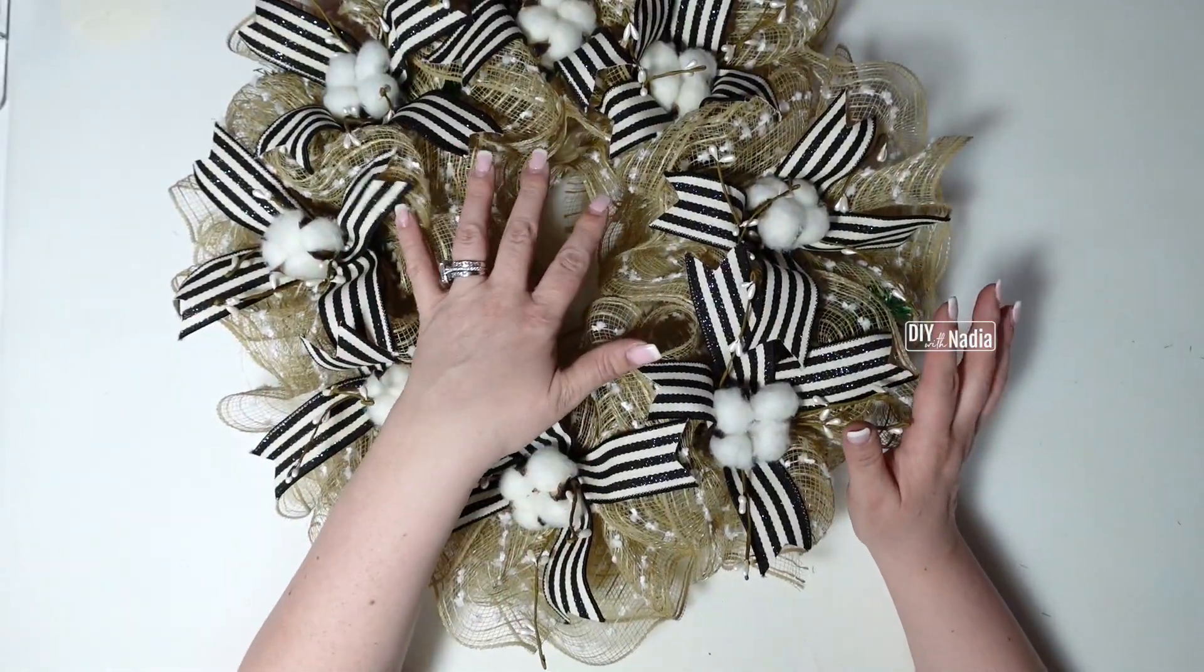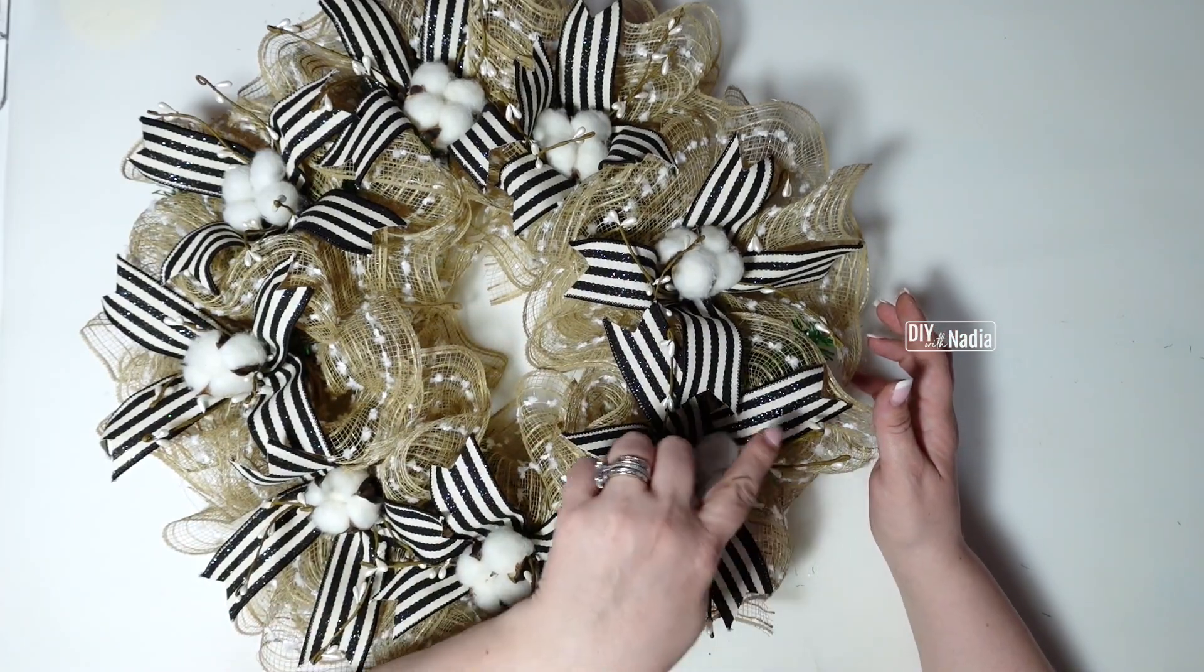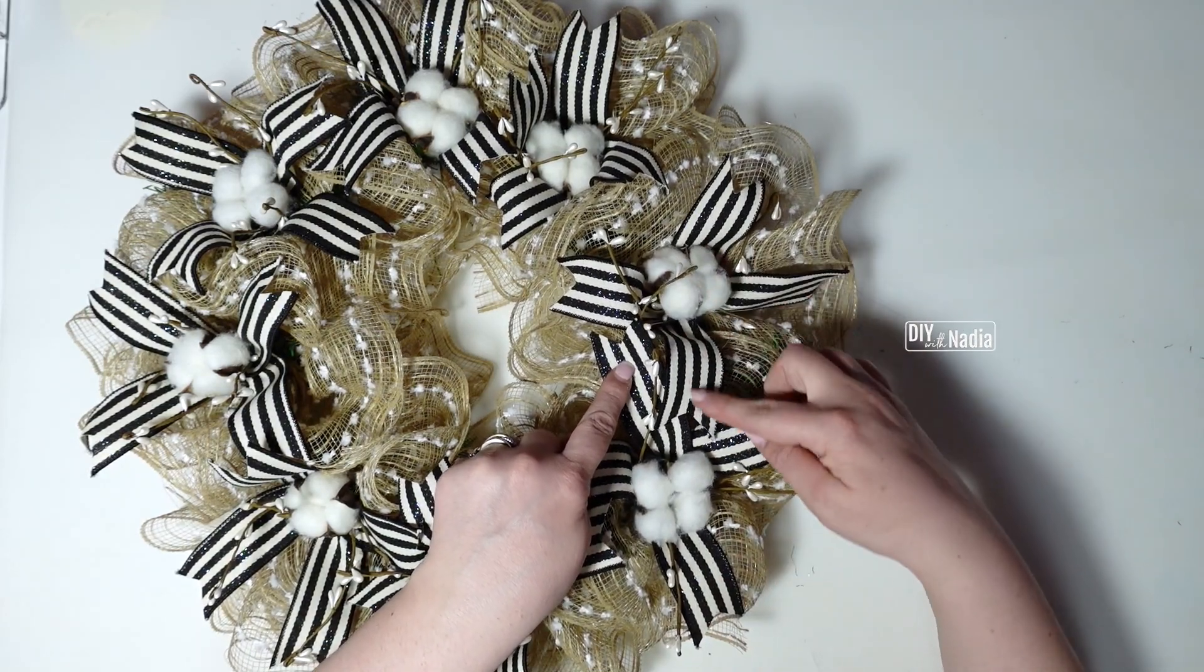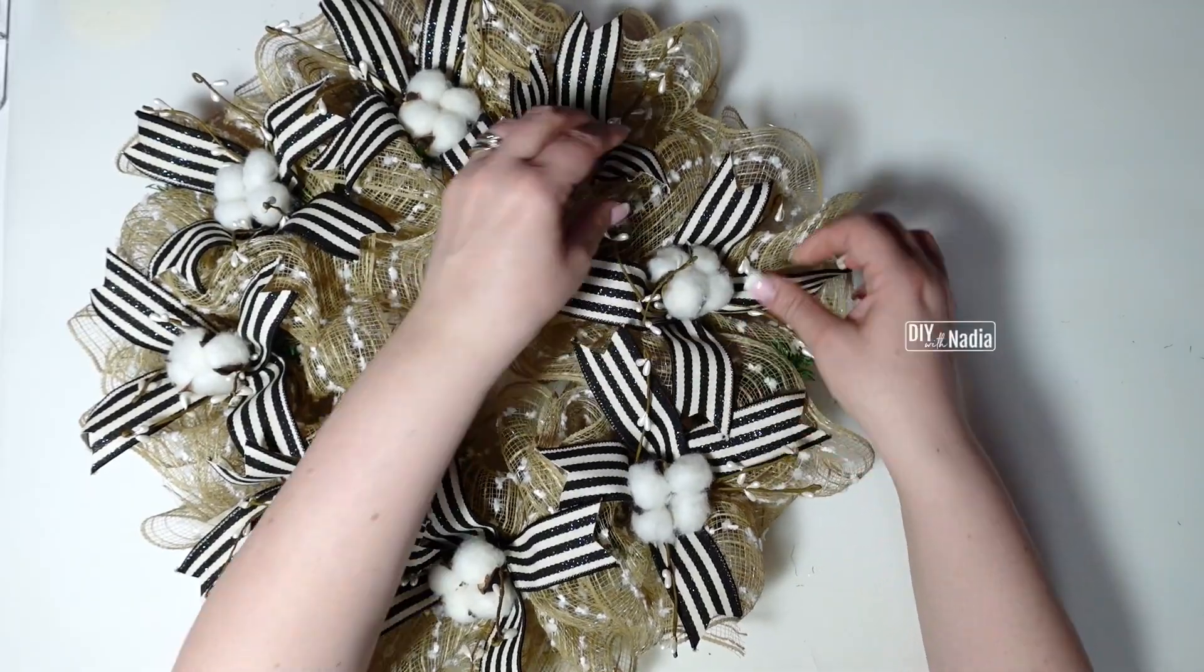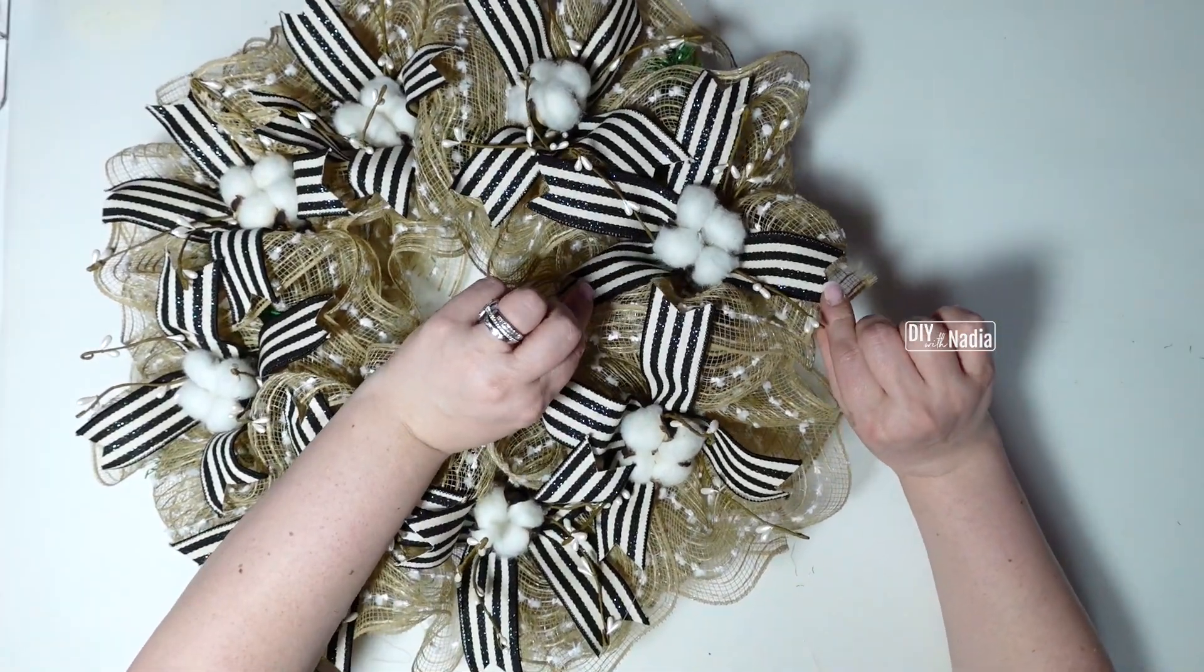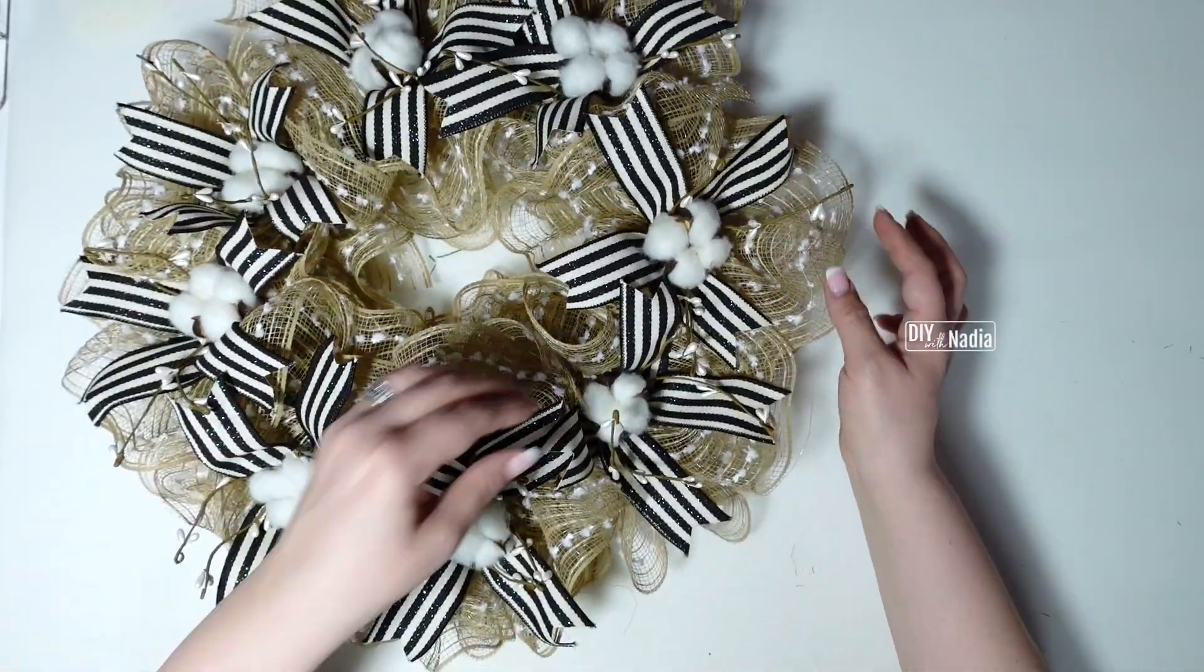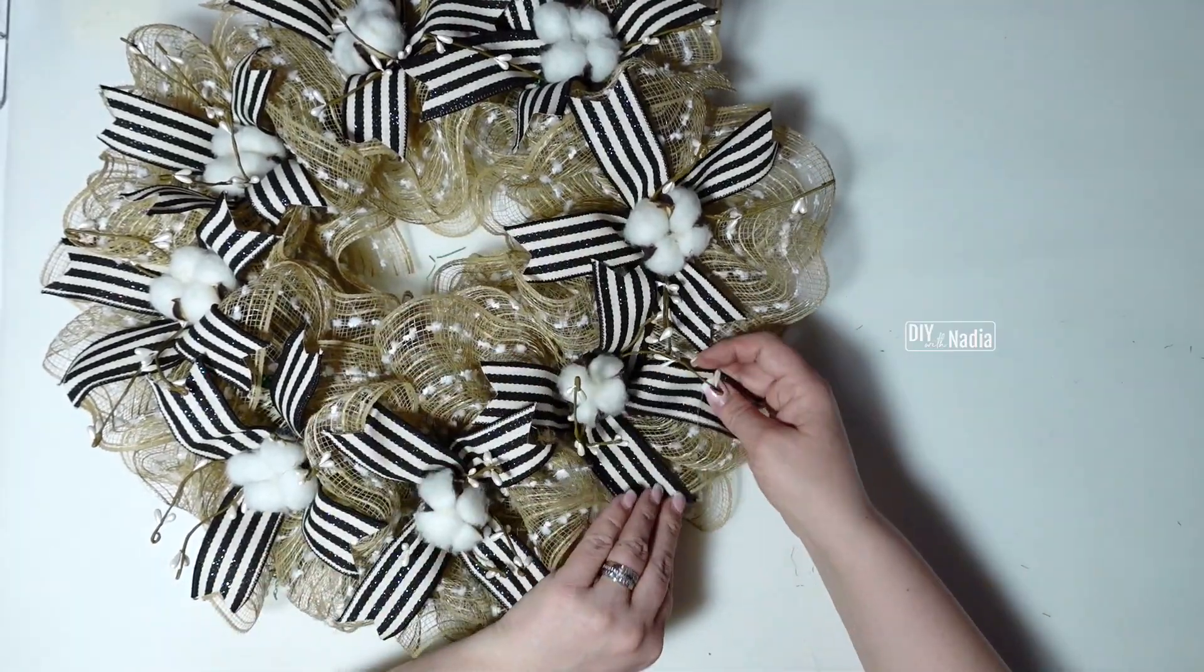Before we get to the centerpiece I just want to show you how I did the ribbon because we're going in a little x right here. So if I have my little x going this way right here then this one is going to go this way where it's kind of interlocking and so on and so forth. You can see the same thing here where it's going like this and then this one is turned sideways like this.